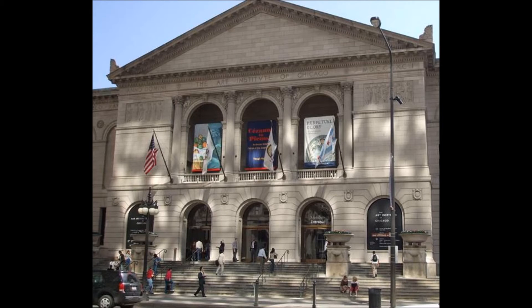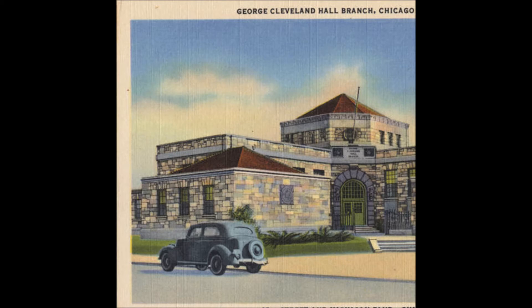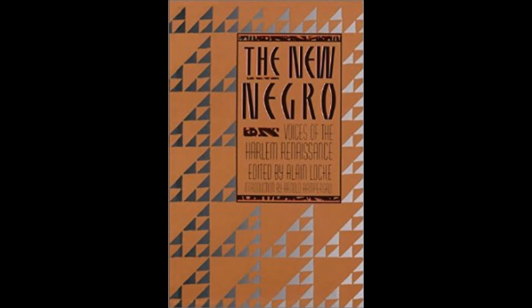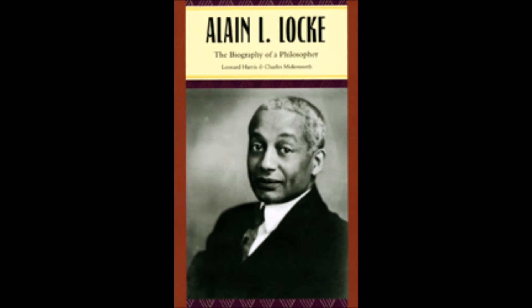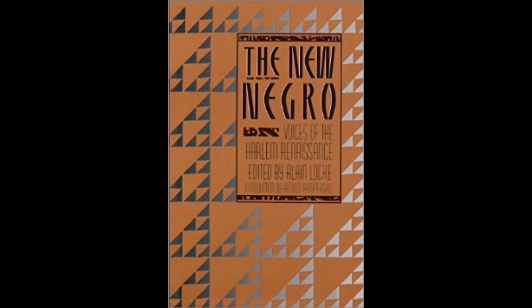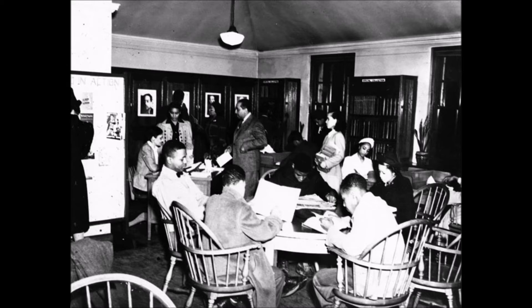Charles White was a good student in elementary school, but in high school he was frequently truant. It was not that he was a bad student — instead of attending school, Charles would walk around the Art Institute of Chicago and the Hall Branch Library on the South Side. It was at the Hall Branch Library that Charles White discovered Alan Lott, a great writer of the early 20th century. This inspired him to return to school, and he graduated from Englewood High School.